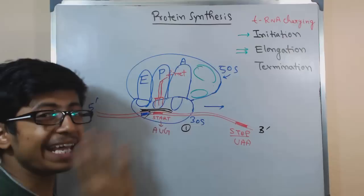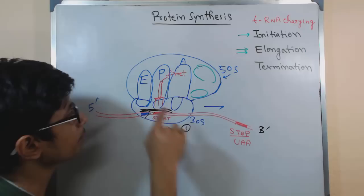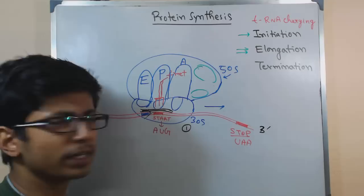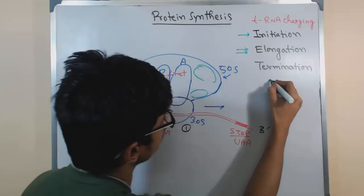The A site will be free again — just sliding one window. The first charged tRNA was formylmethionine, which is modified. The first normal tRNA carrying a regular amino acid will be different depending upon whatever codon is present. Let's say there is a green colored tRNA now with a particular amino acid at its end.